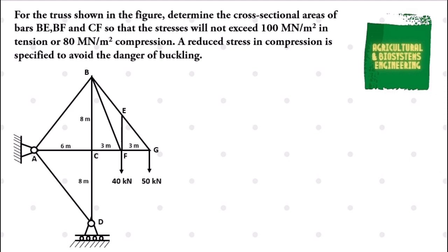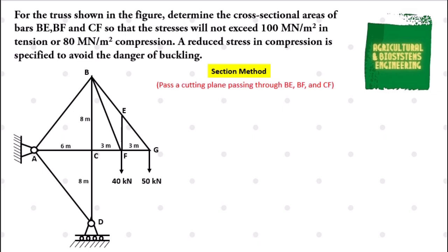In this problem, we are going to solve for the cross-sectional areas of bars BE, BF, and CF. The first step we have to do is to use the section method. We will pass a cutting plane passing through bars BE, BF, and CF.